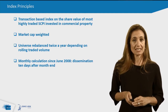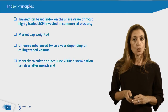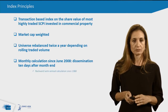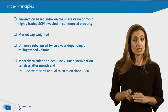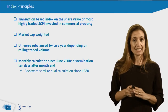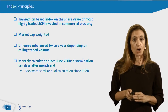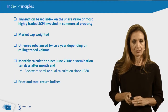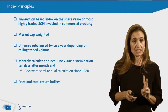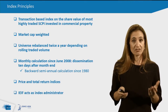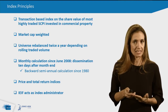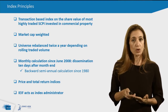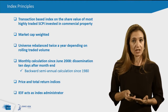The index has been calculated since June 2008 and is released 10 days after a month's end, making dissemination quicker. The index has also been computed backward since 1980 on a semi-annual frequency. There are two indices: price and total returns. Our institution, EDHEC-Risk, acts as index administrator, backed by a scientific committee chaired by the EDHEC Risk Institute.